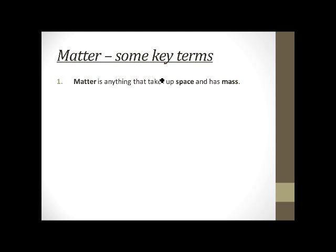First one is matter is anything that takes up space and has mass. Two, weight is the measure of the pull of gravity on an object. So it's possible for something to have mass, but not have weight.